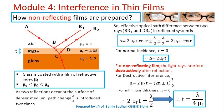The reflection at point B occurs at the surface of a denser medium, and therefore an additional path change of λ/2 is introduced. Reflection at point C also occurs at the surface of a denser medium, and therefore a path difference of λ/2 is introduced a second time. As a result, the effective optical path difference between ray BR1 and ray DR2 becomes 2μ_f·t·cos R.